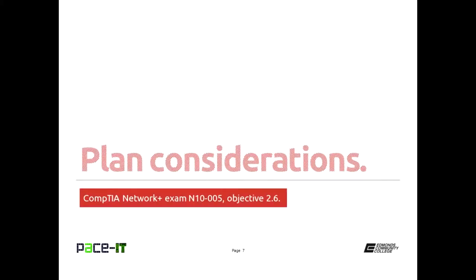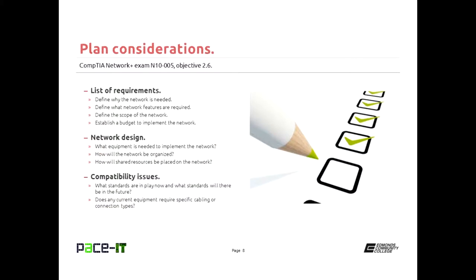So now let's talk about some plan considerations. First up is you need a list of requirements. You need to define why the network is needed. If the network is just needed to share files within an office, that's pretty simple. But if you need to share files but keep some computers from accessing those files while others need access to them, you need to document that so you can figure out what you need.